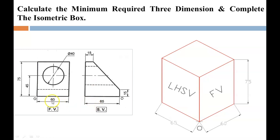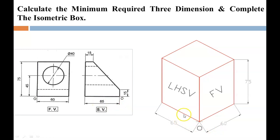The base of the front view is 60, so this side becomes 60, and the height is directly given as 75, so the height becomes 75. Because of this line of length 75mm, these two parallel lines also become 75mm. The base of the side view is given as 65. So now you have three minimum required dimensions — 60, 75, and 65 — to complete the isometric box.